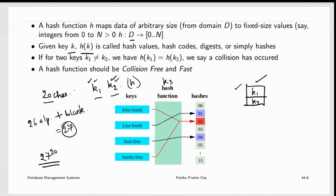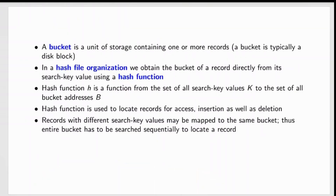Collision happens when for two different search keys K1 and K2, the hash function generates the same hash value. Looking at this example, the keys are names: John Smith, Lisa Smith, Sam Doe, and Sandra Dee. John Smith gets mapped to one bucket, but Sandra Dee is also mapped to the same bucket even though they are different search keys — this is a collision. Lisa is mapped to another bucket and Sam to another. A bucket is nothing but a unit of storage containing one or more records. In a hash file organization, we obtain the bucket of a record directly from its search key value using the hash function.